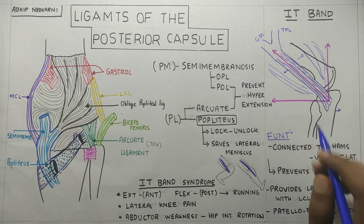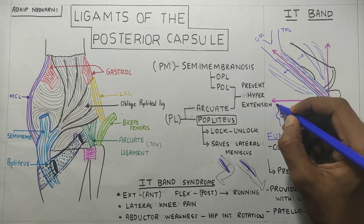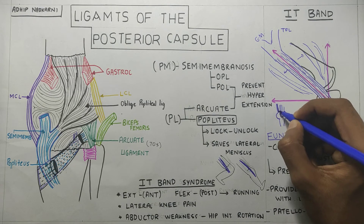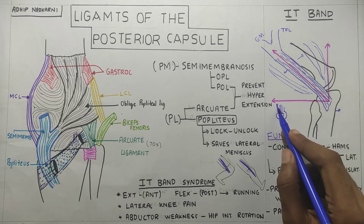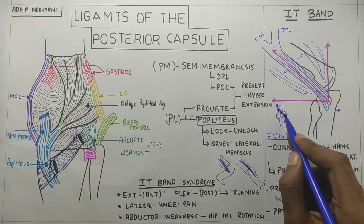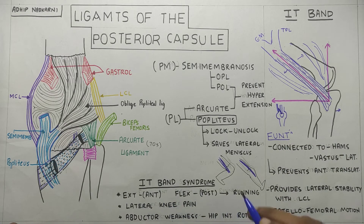The IT band also influences patellofemoral motion, which we covered in the LCL and MCL video. The patella is attached to the IT band at the side by the patellofemoral ligament, and this IT band influences the movement of the patella in the knee joint. Another condition related to the IT band is IT band syndrome.